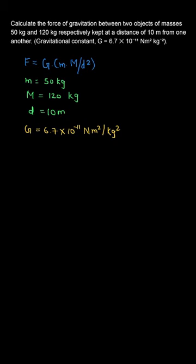So, on applying the formula of force, that is capital G into capital M into small m by d square, we substitute the values, so the force can be written as 6.7 x 10 to the power minus 11, multiplied by 50 x 120, divided by square of 10.